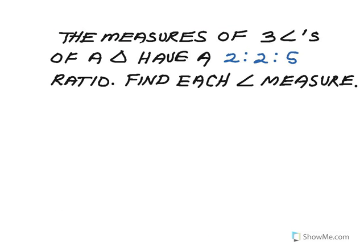For the last example, just a little word problem, we have the measures of three angles of a triangle have a 2 to 2 to 5 ratio. Find each angle measure. So what this means is that the angles, two of them are the same, and one's a little bigger, the one that has the ratio of 5. So what I do is I make X equal to one part, and I can say 2 to 2 to 5 can be represented as a 2X and a 2X and a 5X.